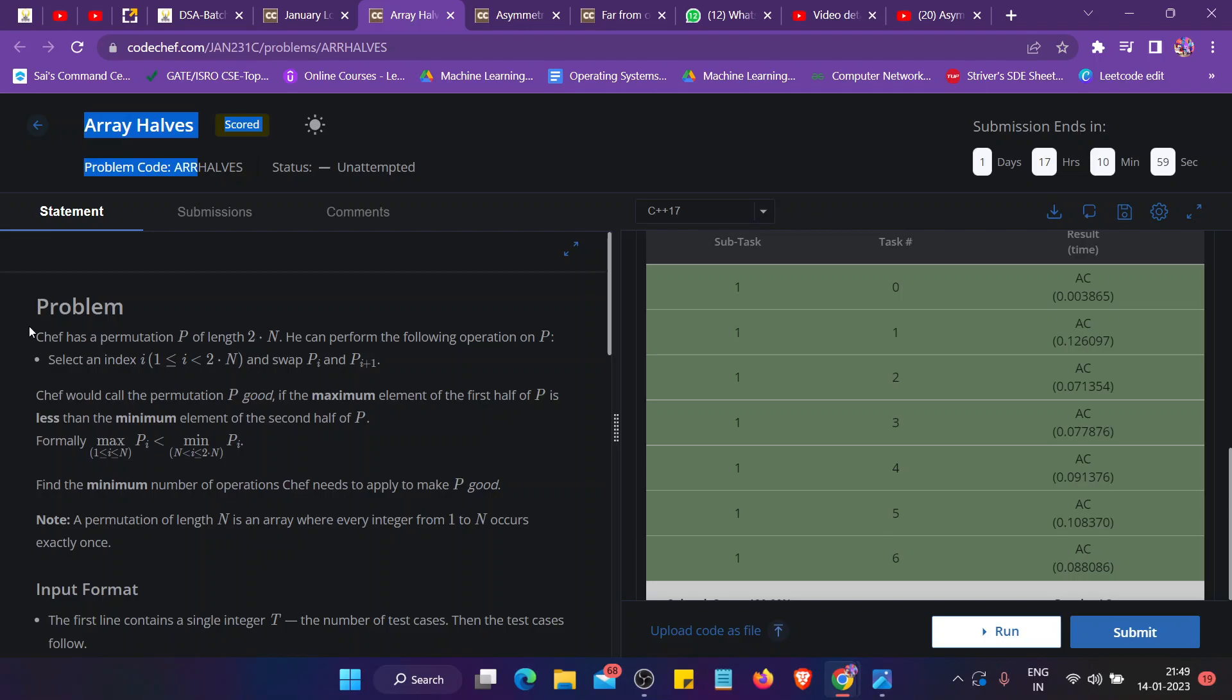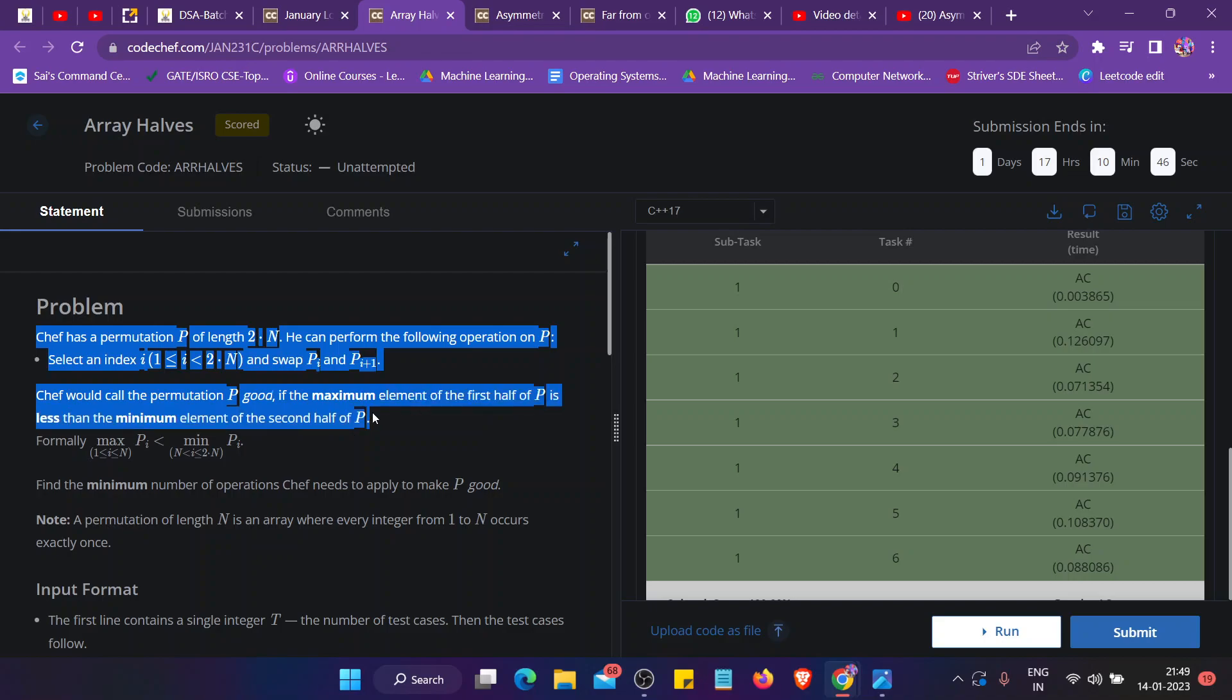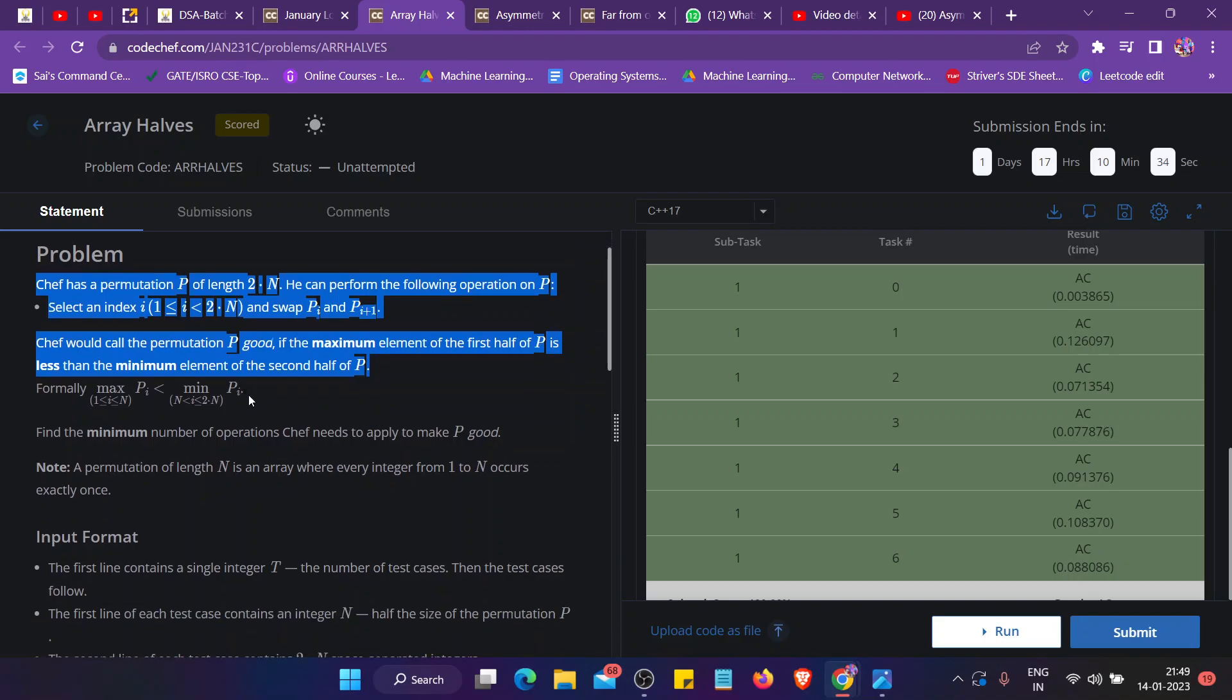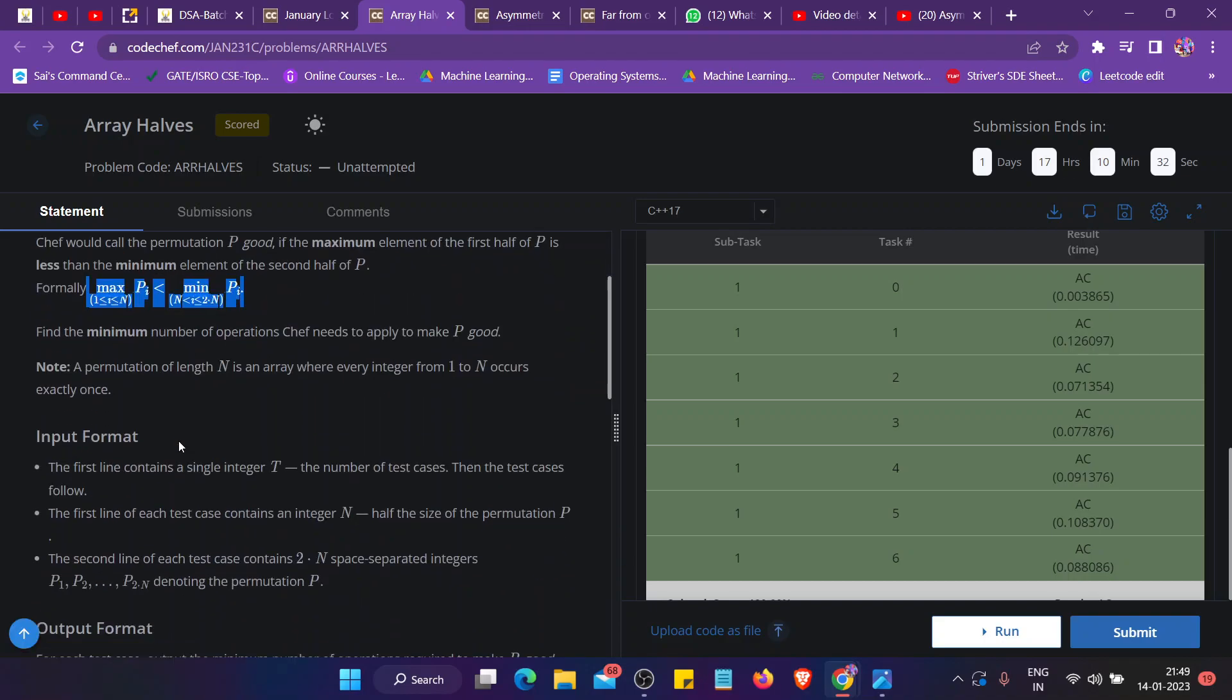The question states that Chef has a permutation P of length 2N, and he can perform the following operation on P: he can select an index i and swap i with the next index i plus 1. Chef would call permutation P good if the maximum element of the first half of P is less than the minimum element of the second half of P.